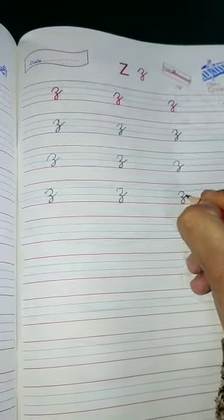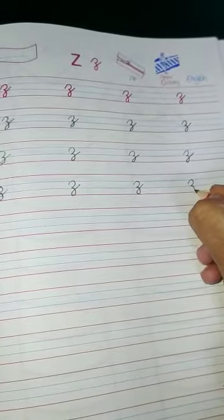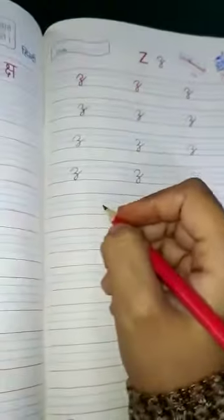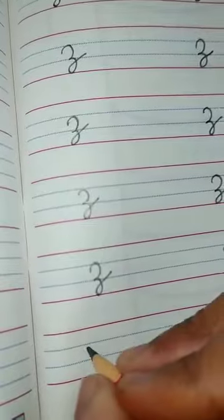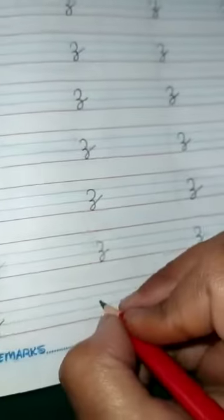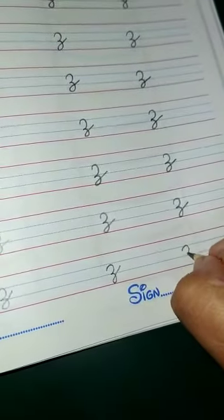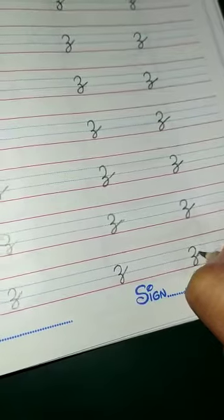Z for Zebra, Z for Zebra, Z for Zebra. And, again write it. Like this. Z for Zebra, Z for Zig Zag, Z for Zebra crossing.